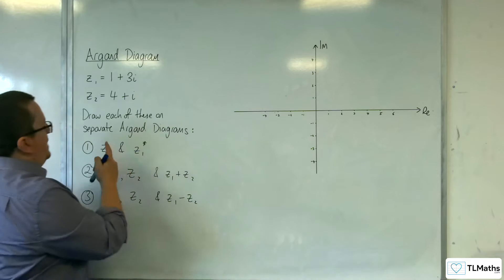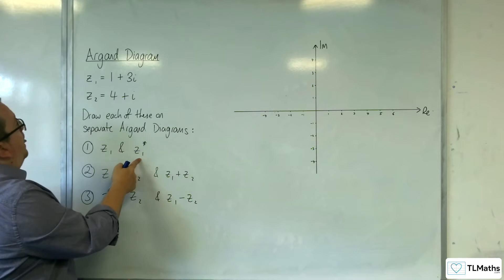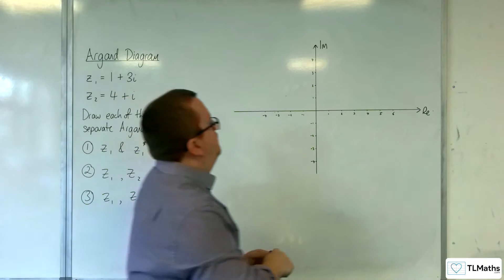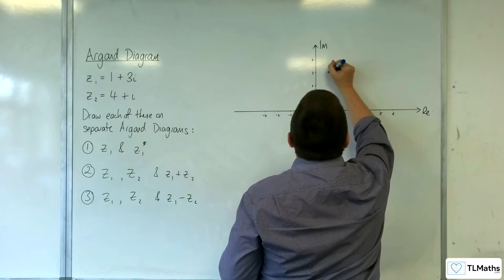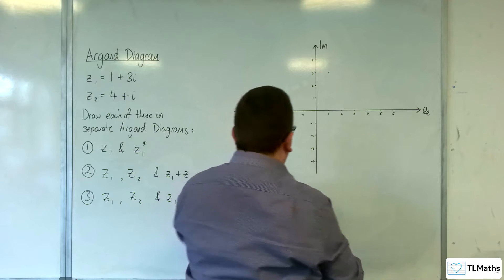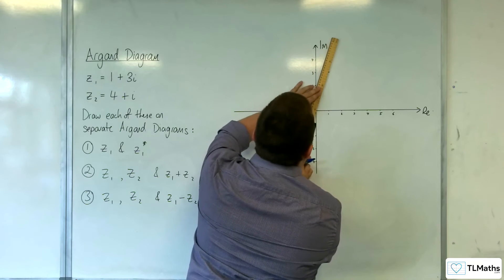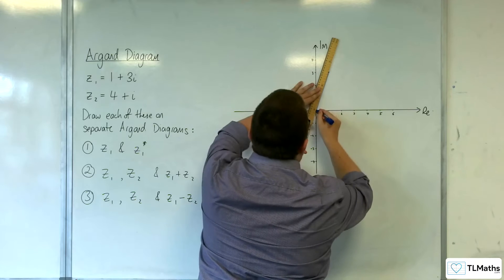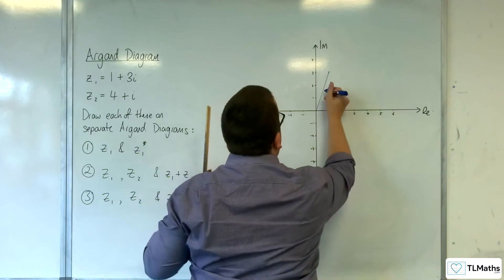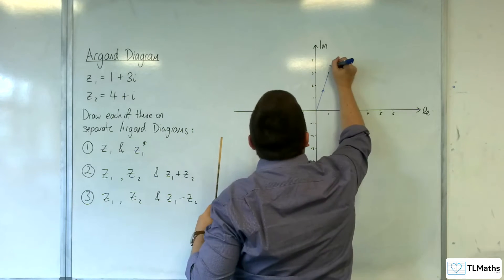First of all, let's have a look at Z1 and Z1 star. So, 1 plus 3i would be up here. Okay, so let's draw that as a vector. Like so. That's Z1.